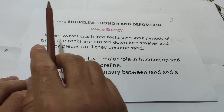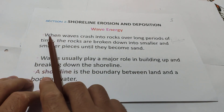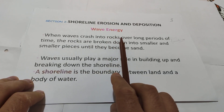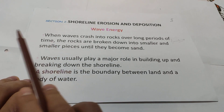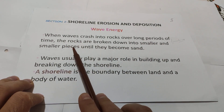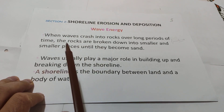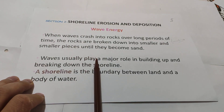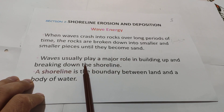Shoreline erosion and deposition: wave energy — waves crash into rock, and over a long period of time the rock is broken down into smaller and smaller pieces until they become sand. Weathering and abrasion both play a major role. Waves usually play a major role in building up and breaking down the shoreline, which means the beach.